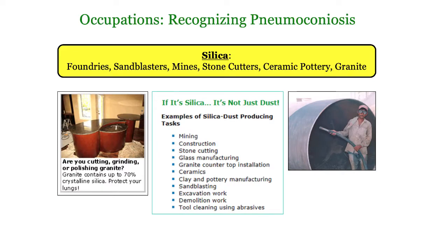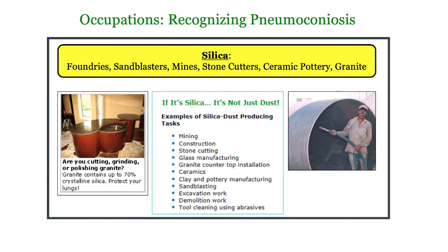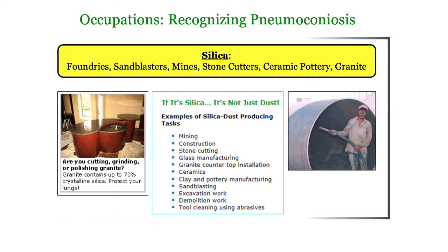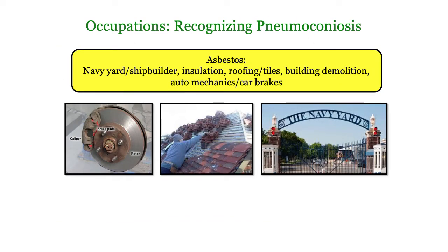Silica exposure is not quite as obvious. The principal occupations or industries include foundry work, sandblasting, mining, and granite workers. The occupations for silica are not usually a deal-breaker given the other unique features a silicosis vignette will include. You should be familiar with the common sources of asbestos exposure, including shipbuilders, roofers, auto mechanics working on car brakes, and insulation workers.